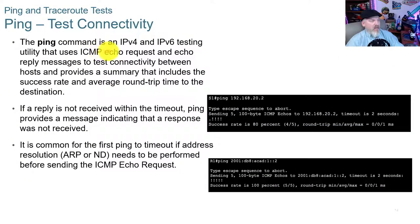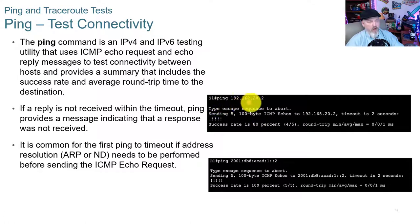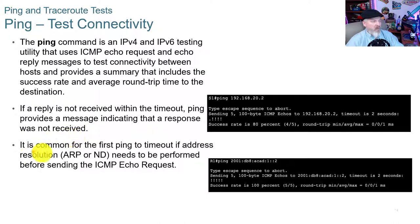The ping command is a v4 and v6 testing utility that uses ICMP echo request and echo reply messages to test connectivity between hosts, providing a summary including the success rate and average round-trip time. For example, pinging 192.168.20.2 sent five packets, got an 80% success rate. If a reply is not received within the timeout, ping reports no response. It's common for the first ping to timeout if ARP or ND needs to be performed first; if the ARP table isn't built, it will fail, but a second attempt will typically succeed.